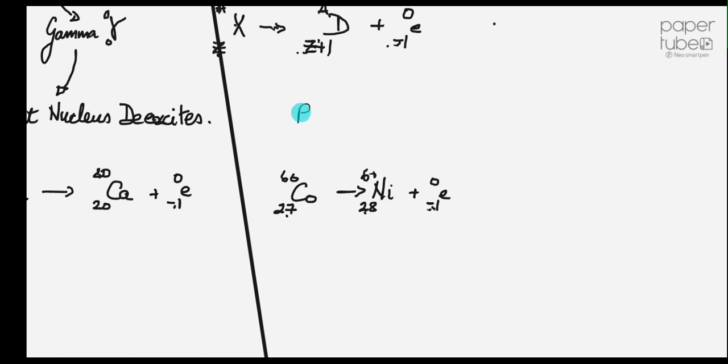And the last one. Phosphorus P-32 goes to sulfur plus 0, -1 e. So that must be 16. 16 take away 1 gives me 15. And that must be 32. And there we have all those questions done.